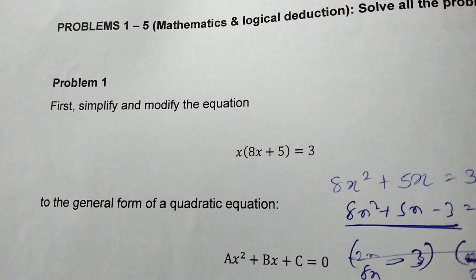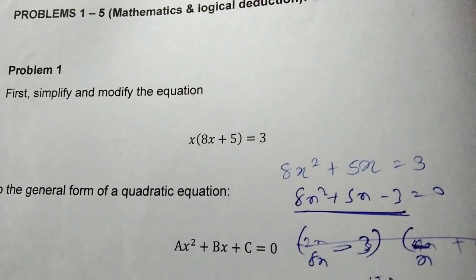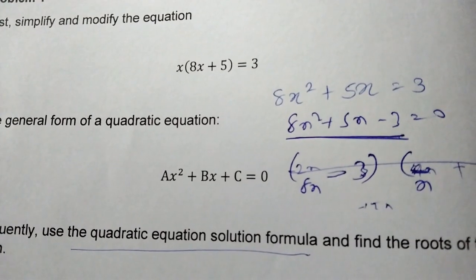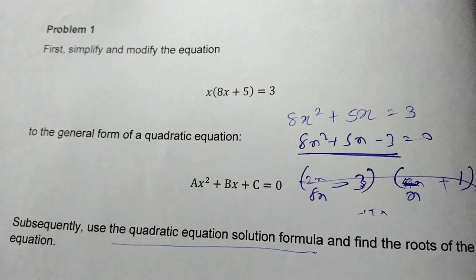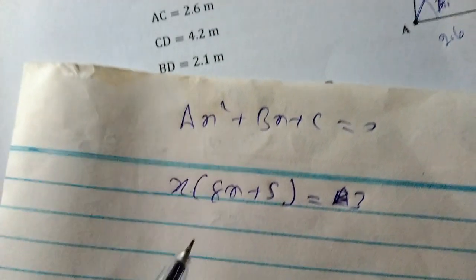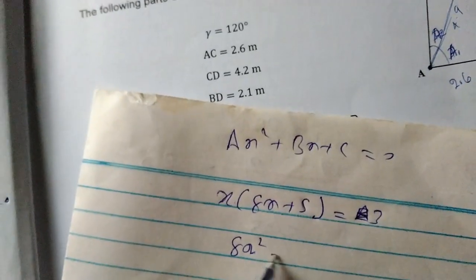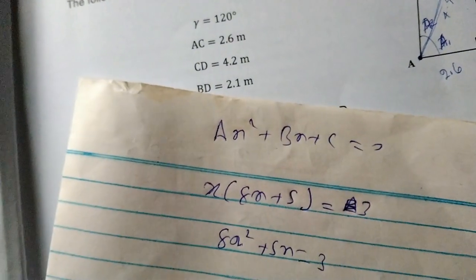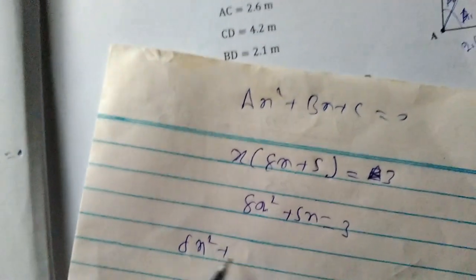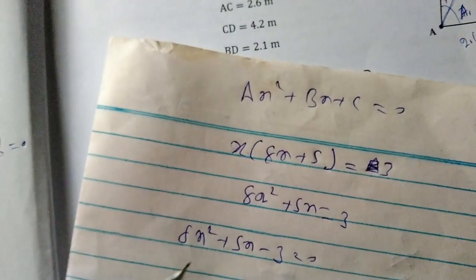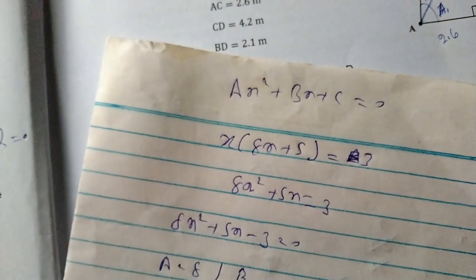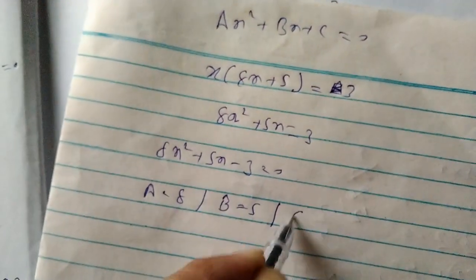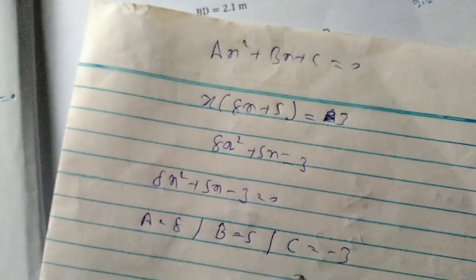For problem one, first simplify and modify the equation. We substitute a for 8x and b for 5x. This formula is called: let a equal 8x and b equal 5x. This gives us the solution.